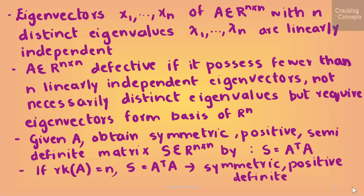Given a matrix A, we can always obtain a symmetric positive semi-definite matrix S belonging to R^{n×n} by defining S = A^T A. If the rank of A is n, then S = A^T A is symmetric positive definite.